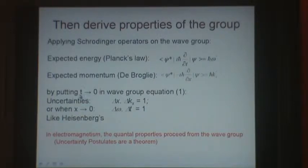Or we can put t equals 0 in the travelling wave group, and we find one of Heisenberg's uncertainty principles, dx dk equals 1. Or if we put x equals 0, the other uncertainty principle. So in electromagnetism, the quantal properties proceed from the wave group, and the uncertainty postulates are written as a theory.